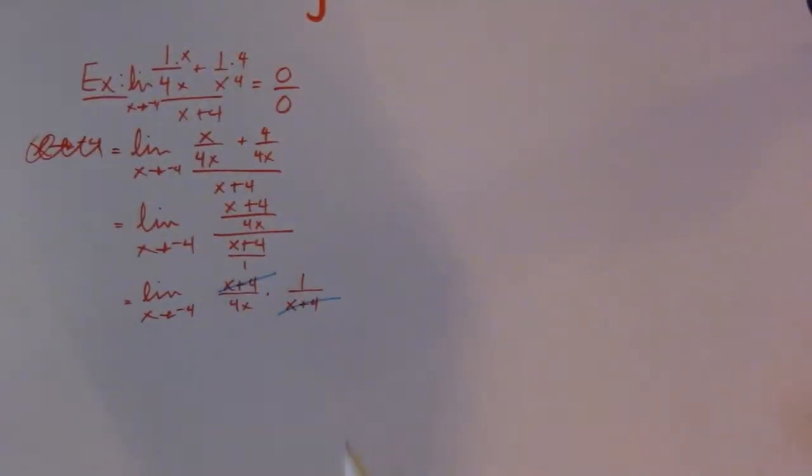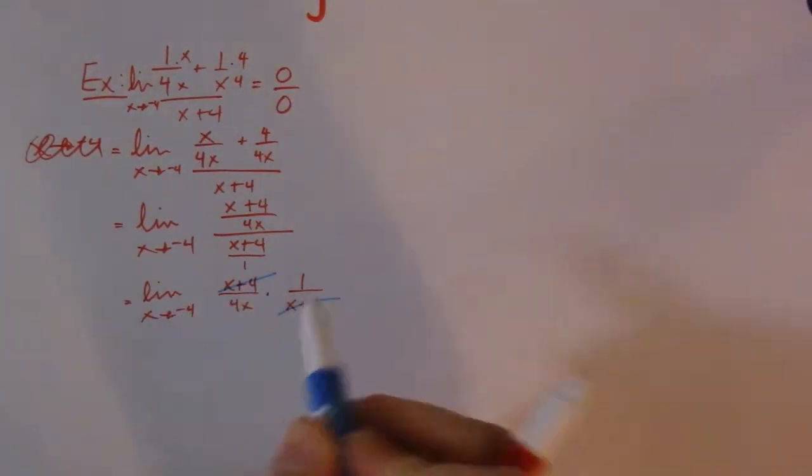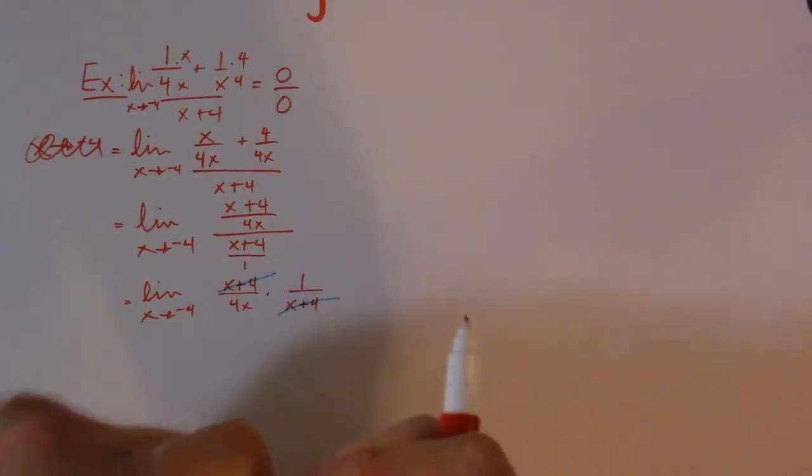And again, you can tell what's going to cancel based on what limit you have. As it goes to negative 4, I know that x + 4 is going to have to cancel somewhere. So I can go ahead and rewrite this as 1 over 4x.